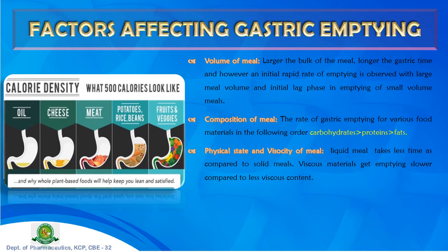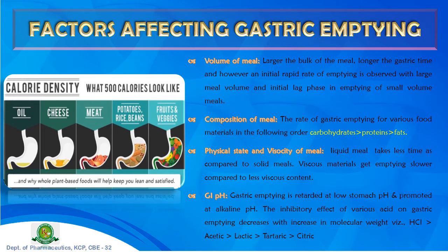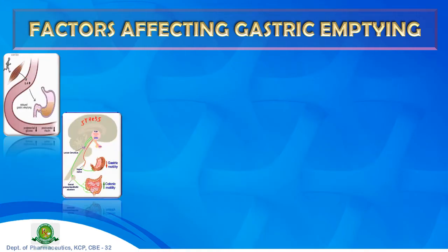Fourth, GI pH — gastric emptying rate is retarded at lower stomach pH and promoted at alkaline pH. The inhibitory effect of acids on gastric emptying decreases with increasing molecular weight, in the order: hydrochloric acid > acetic acid > lactic acid > tartaric acid > citric acid. Fifth, exercise — vigorous physical training retards gastric emptying.